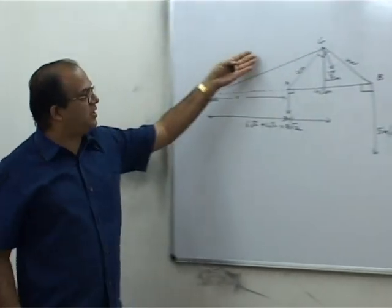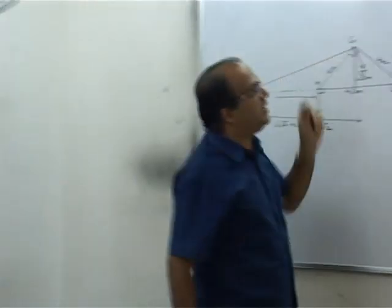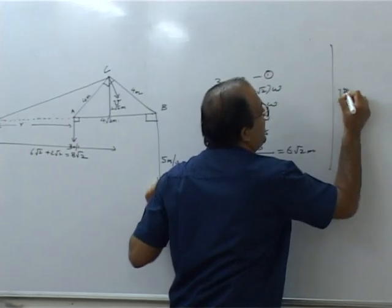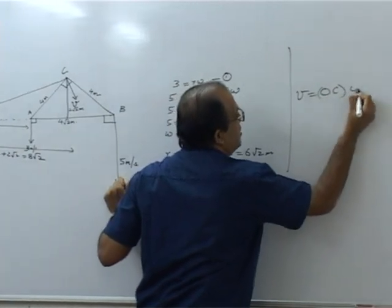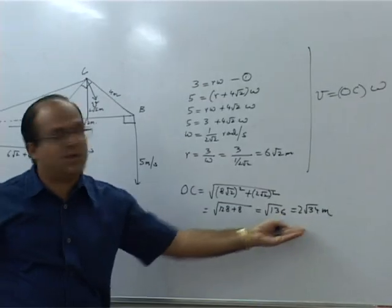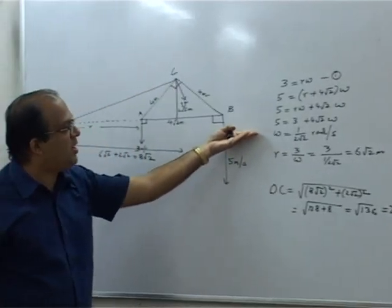So now we know the distance OC. Speed of C will be given by OC times ω. OC is 2√34 and ω is 1/(2√2).